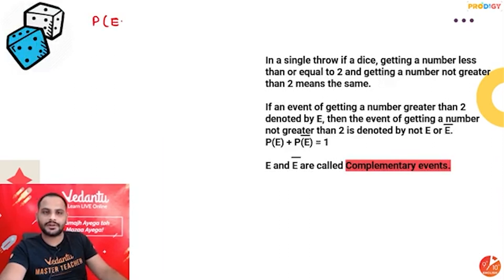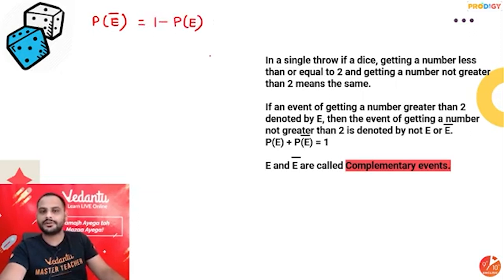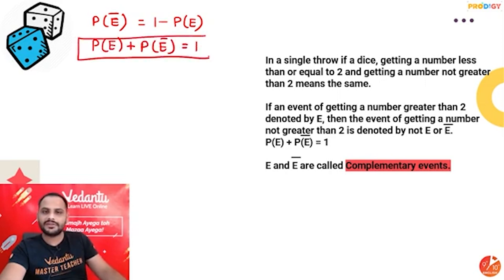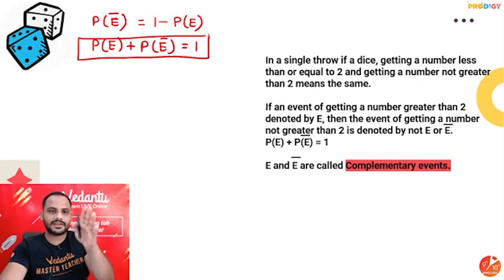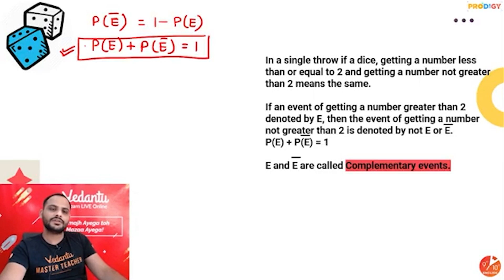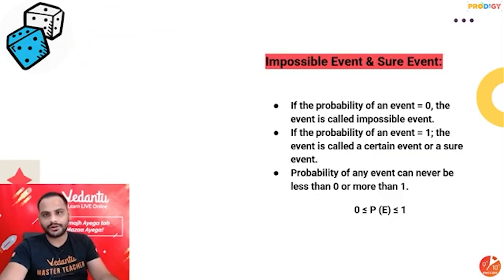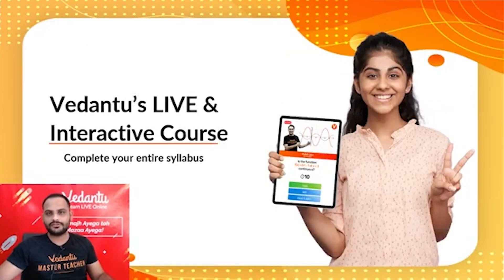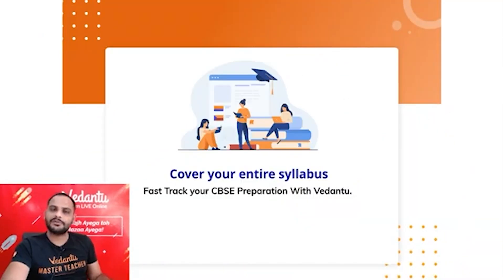If we know the probability of happening of something, the probability of not happening of something is represented by E-bar. Probability of not happening equals 1 minus probability of happening. Or we can say: probability of happening plus probability of not happening equals 1 — obviously, whether the event will happen or not, one of them is sure. This formula is used whenever you need to find the probability of not happening of something.